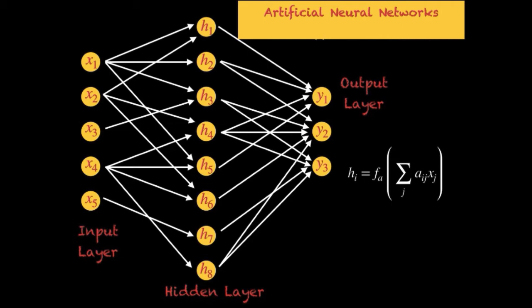This is an important step because if you did not have the activation function, all you would have are linear computations, giving you only the ability to estimate linear functions. But that is not what we are trying to achieve — we use ANNs specifically because we want to estimate non-linear relationships between x and y, between the input and output. That is why we pass the linear transformation through a non-linear activation function.